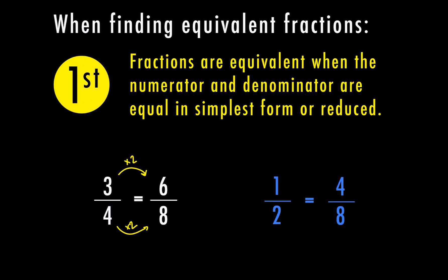Another example is 1 half equals 4 eighths. 1 times 4 equals 4, and 2 times 4 equals 8, so 1 half and 4 eighths are also equal. If you think of 1 half, that's a really easy one — if your numerator is half of your denominator, then it's going to reduce to 1 half. Other examples might be 5 over 10, 10 over 20, 50 over 100, or 100 over 200. Anytime your numerator is half of the denominator, your answer can reduce to 1 half.